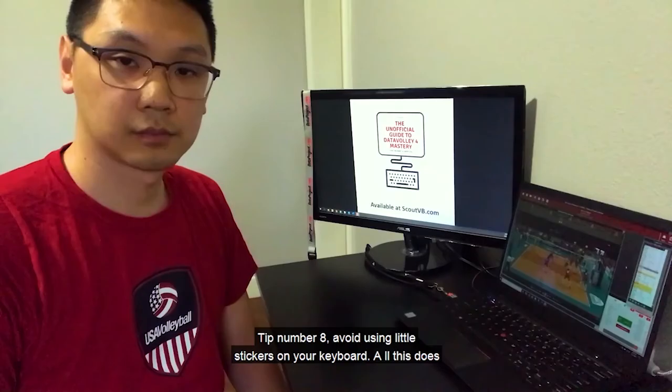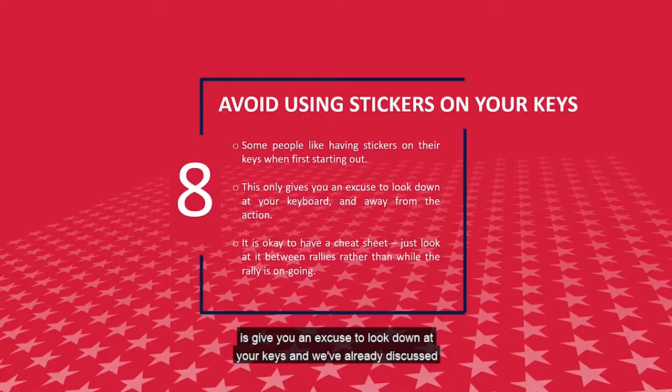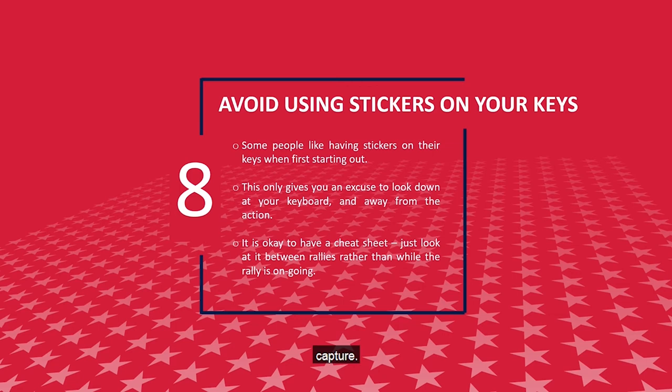Tip 8: avoid using little stickers on your keyboard. All this does is give you an excuse to look down at your keys. The more you look down at the keyboard, the less action you're seeing on the floor, and the less action we see on the floor, the less we can actually capture.